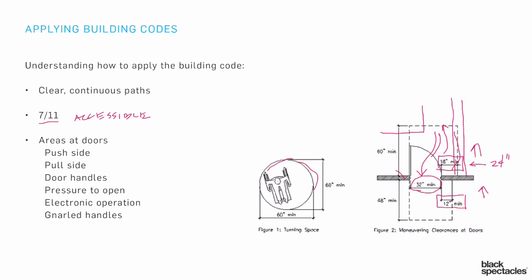Why aren't we using 32-inch doors if we're allowed to use 32-inch spaces for accessibility? The reasoning is that if I have my door as part of a door frame, and this is a 36-inch dimension, then because of the thickness of the door plus the stops, I start subtracting out of that 36 inches, and what I'm effectively leaving is approximately 32 inches. So when you see that 32-inch figure, what that's referring to is: I need a 36-inch door in order to get that 32 inches clear.